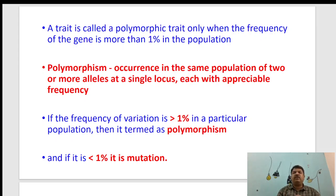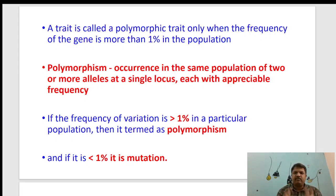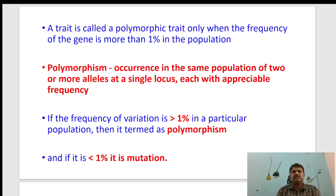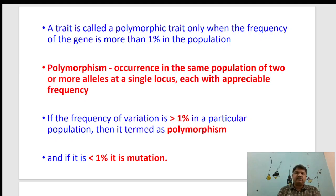A trait is called a polymorphic trait only when the frequency of the gene is more than one percent in the population — that means at least one percent, so minimum two alleles. We note allele A and allele B. When you apply Mendel's laws, there are two types of alleles and they can occur in three different conditions.